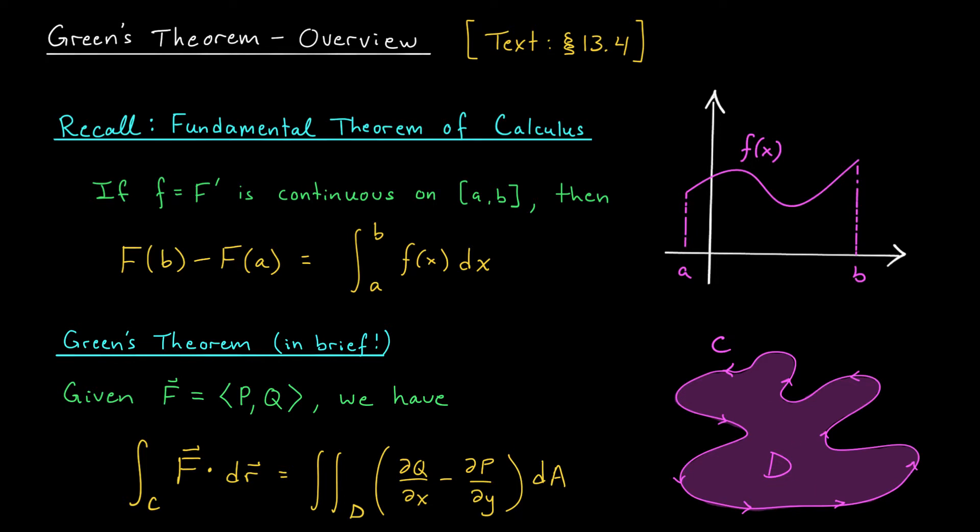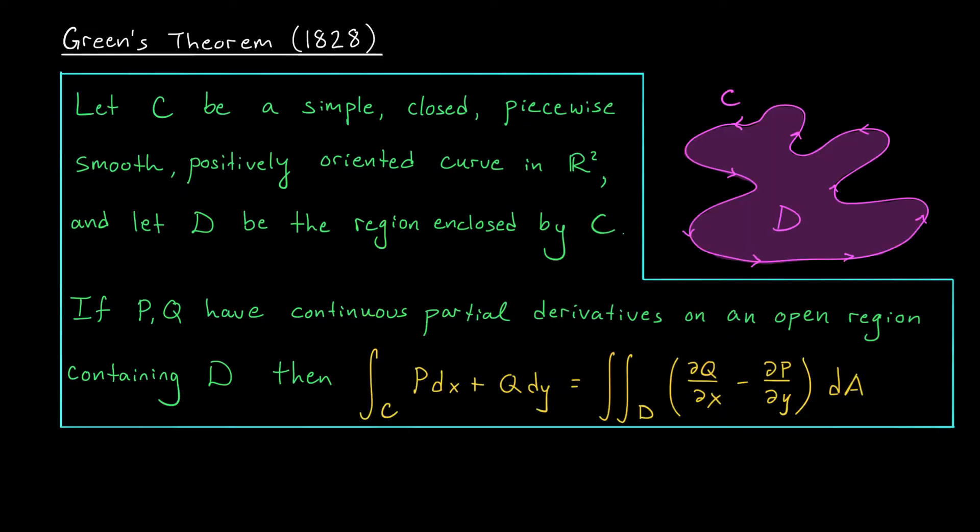Okay, let's check out the precise statement. Here it is, the statement of Green's theorem. It looks a little bulky, but really we're just listing out some basic assumptions. So to start, we need a curve C that's simple, closed, piecewise smooth, and positively oriented.